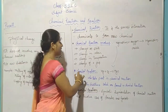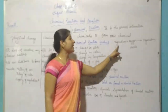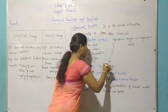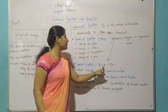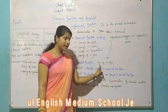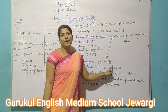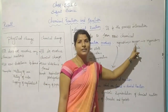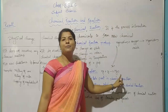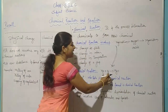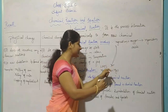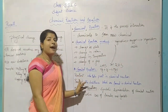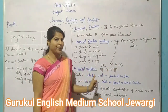Now we are discussing chemical equations. When magnesium burns in oxygen to form magnesium oxide, we write it as a chemical equation: Mg + O2 → MgO. Mg means magnesium, O2 means oxygen, MgO means magnesium oxide. This side we call the LHS side, and this side we call the RHS side. LHS side we call the reactant, RHS side we call the product.